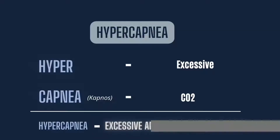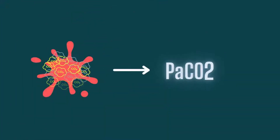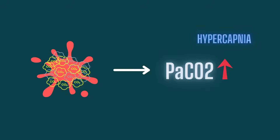Hyper means excessive and capnea is derived from the Greek word kapnos, meaning smoke or carbon dioxide. Together, an excessive amount of carbon dioxide in blood is called hypercapnea. The amount of CO2 dissolved in blood is called PaCO2, or partial pressure of carbon dioxide in blood. An increased level of PaCO2 above normal is hypercapnea.